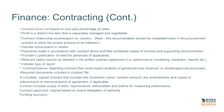Within the files of these contracts, we're looking for documents pertaining to contract price not based on cost plus percentage of costs, profit as a distinct line item that is separately managed and negotiated, and the contract relationship of a subrecipient versus a vendor. This documentation needs to be completed early in the procurement process so that you can see a proper chain that the process was followed under the subrecipient.